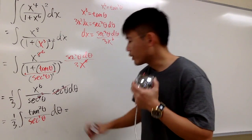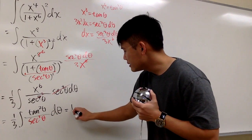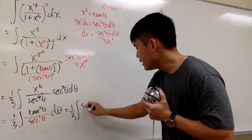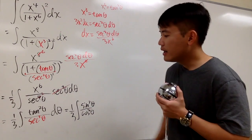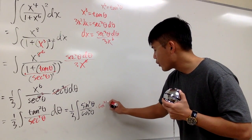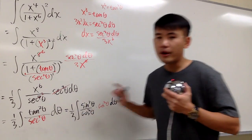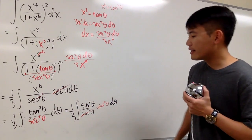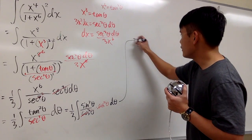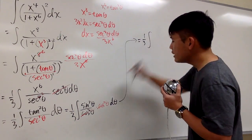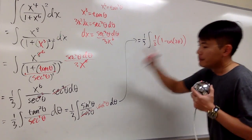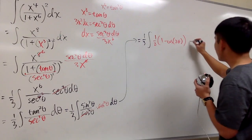Now I'm going to integrate this using some trig identity work. Writing everything in terms of sine and cosine: tangent squared theta is sine squared theta over cosine squared theta. Dividing by secant squared theta is the same as multiplying by cosine squared theta. The cosine squared terms cancel each other out, and we're left with just integrating sine squared theta. To do that, we use the power reduction formula: sine squared theta equals one half times the quantity 1 minus cosine of 2 theta.